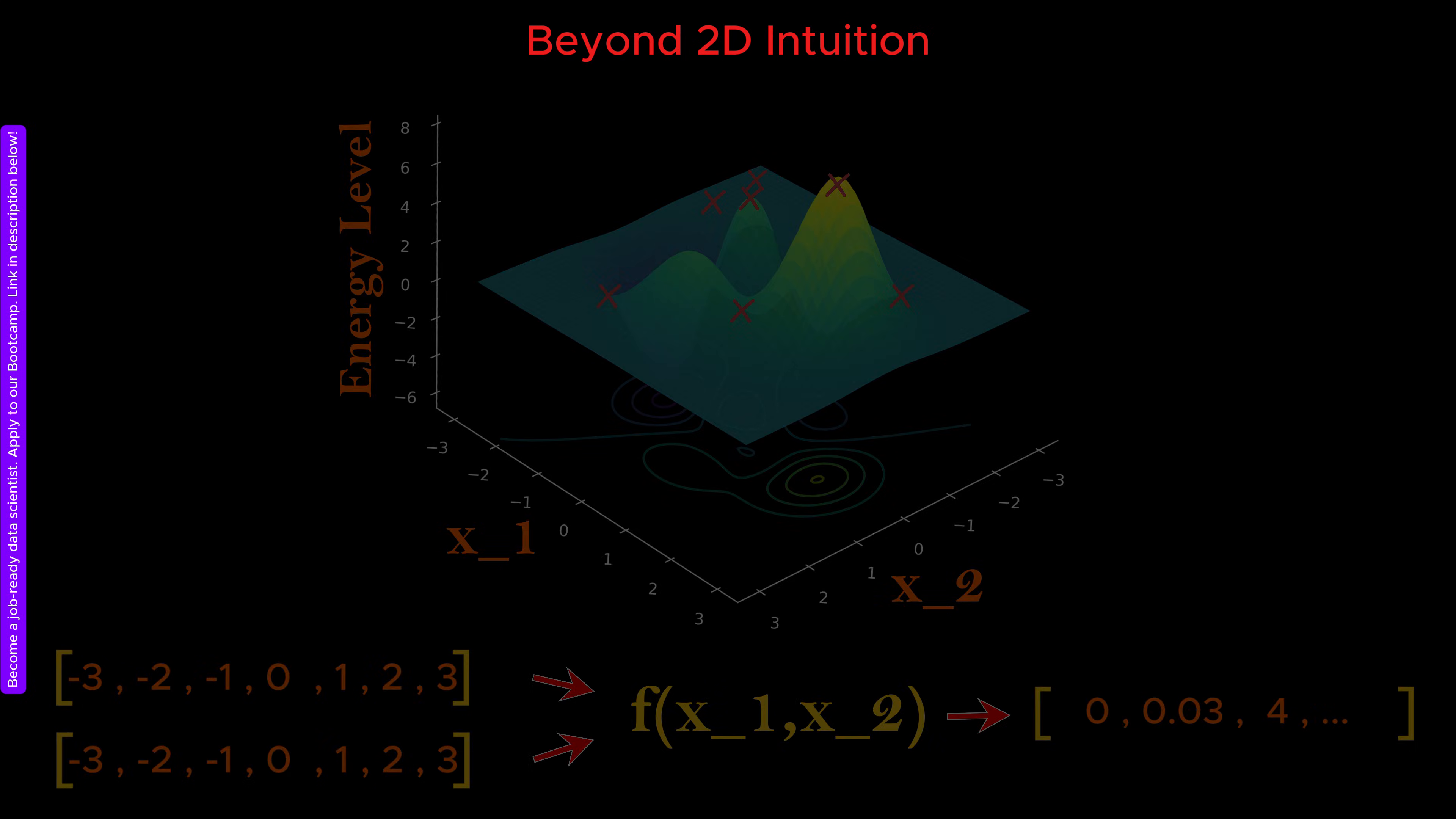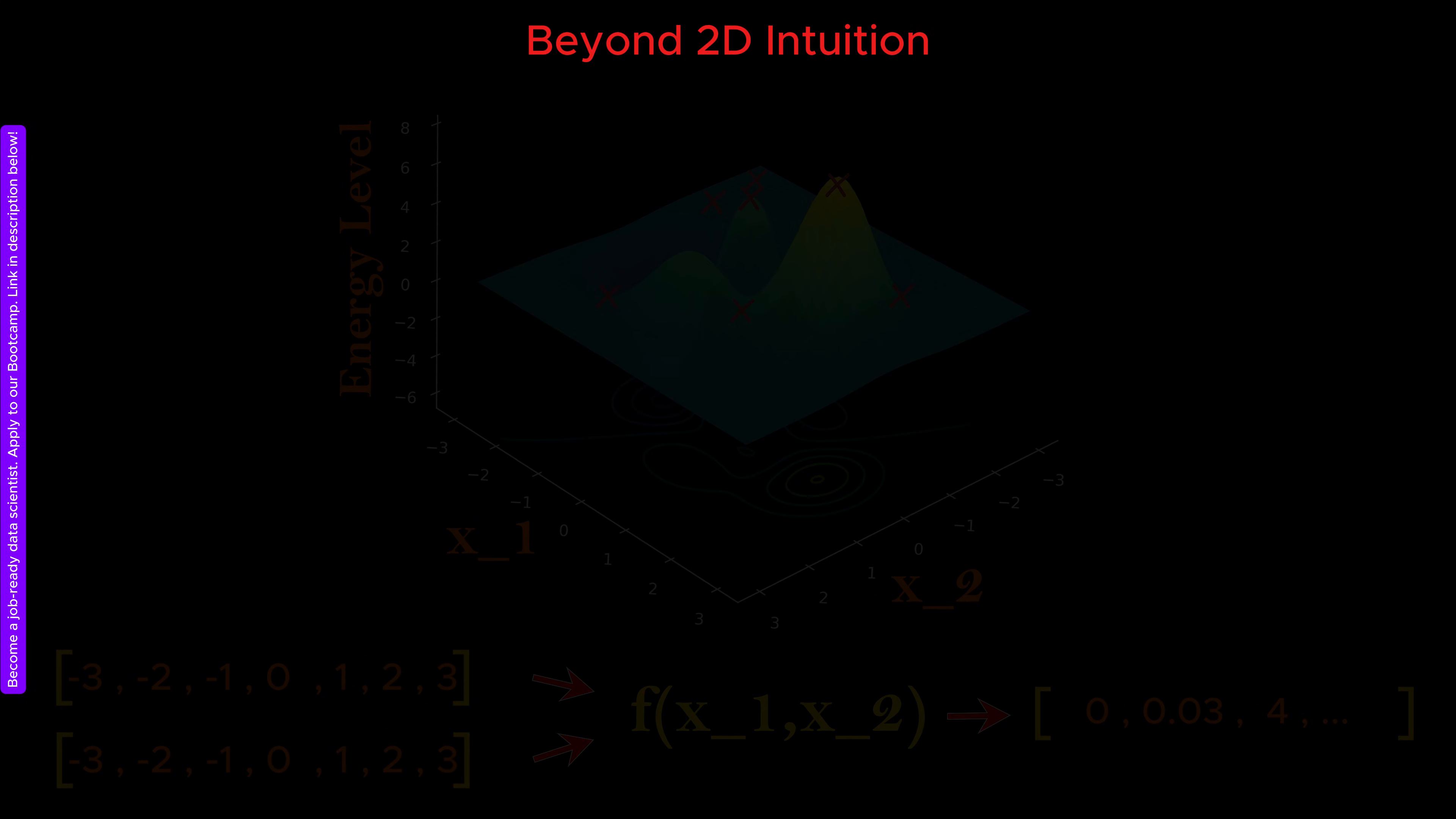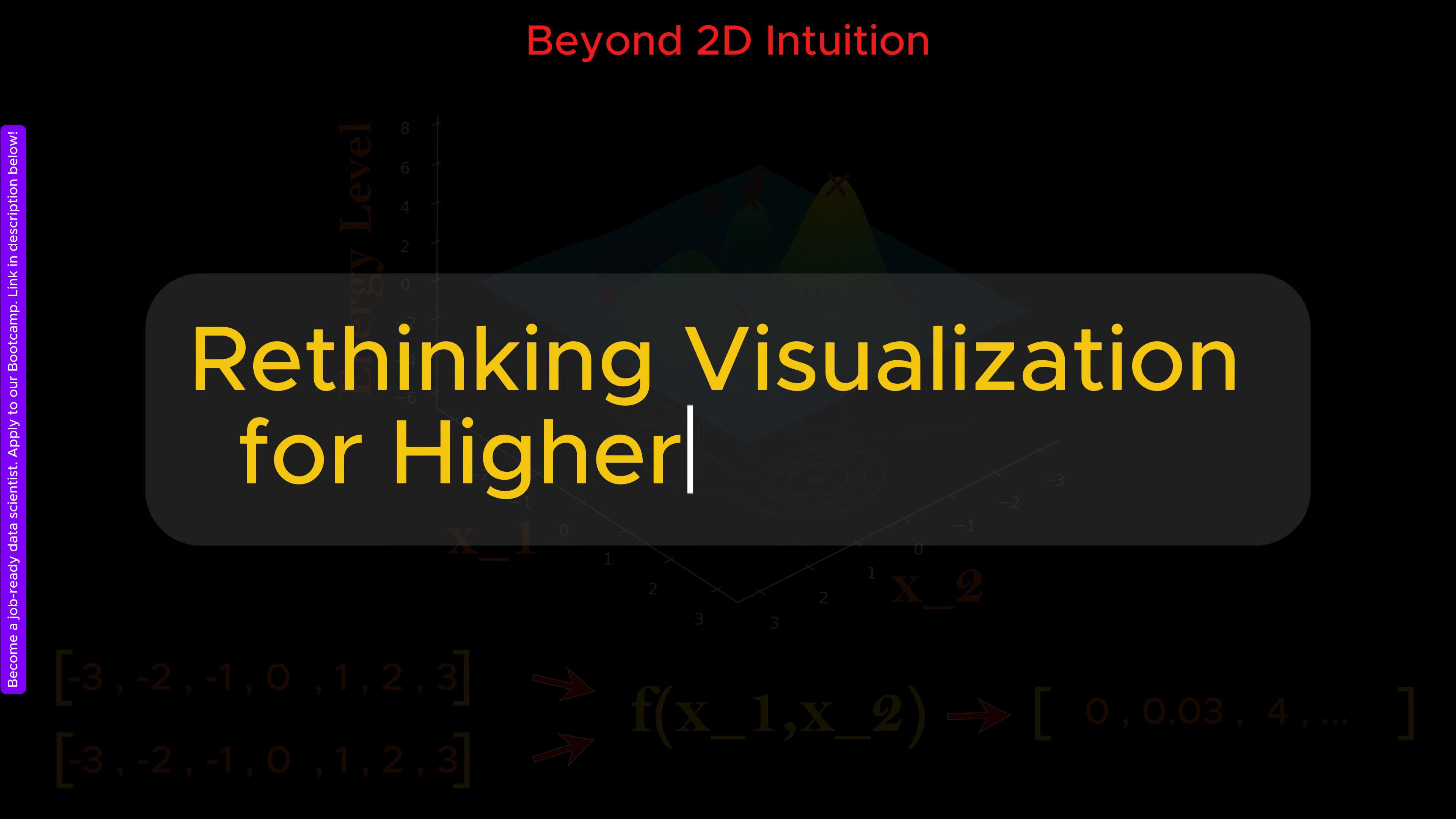However, this is not the only way to interpret what we are doing. To visualize higher dimensional spaces, we need to reinterpret how this plotting process actually works. The conventional interpretation breaks down when the function depends on more than two variables.